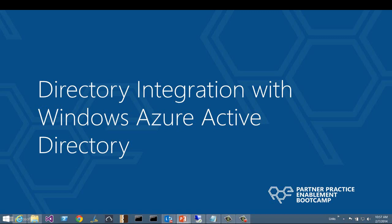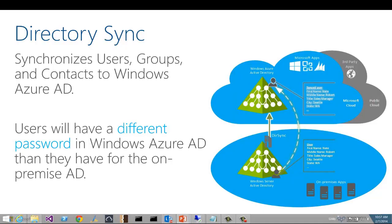There are four primary integration scenarios, and I'm going to talk about the first three in this module. The first scenario is called Directory Sync. With Directory Sync, users, groups, and contacts are synchronized from the on-premise directory to Windows Azure AD. A key point to note is that when user objects are synchronized to Windows Azure AD, their on-premise password is not part of the data that's synchronized. So users will have a different password when authenticating to Windows Azure AD than when they authenticate to the on-premise directory. If you have Server 2012 R2 deployed, this scenario will also synchronize devices.